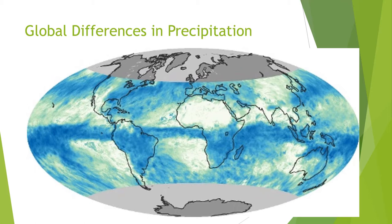On this map, we see that the white and yellow areas include places such as northern Africa, northern Asia, and western United States. These areas all receive fairly low levels of precipitation compared to the other areas that are in blue, such as much of South America, southern Africa, and much of Europe, which receive fairly high levels of precipitation.